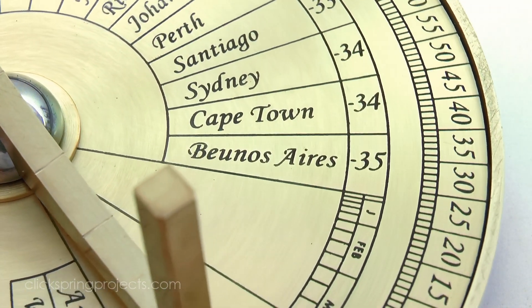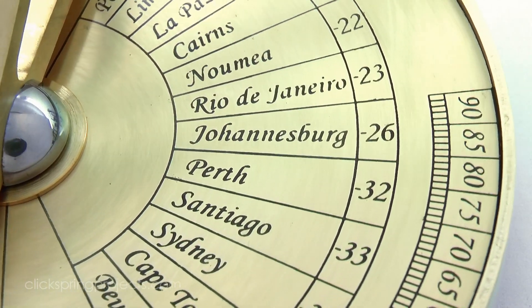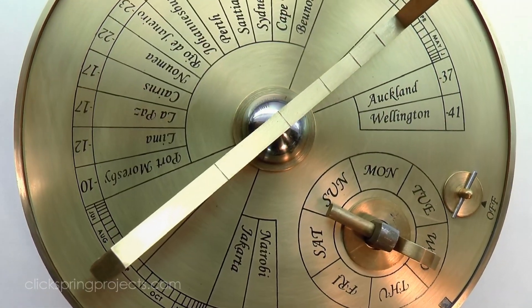This prototype has a southern hemisphere dial, but I'll make a northern hemisphere dial during the series, and patrons can vote for the cities that they think should be listed on the dial.